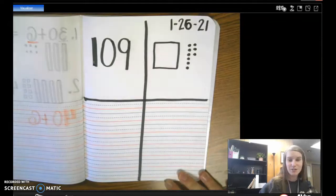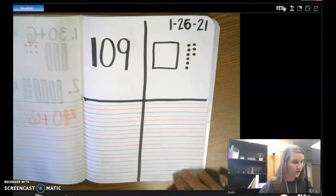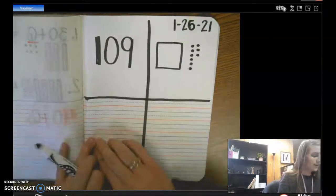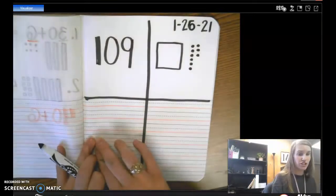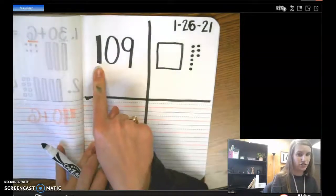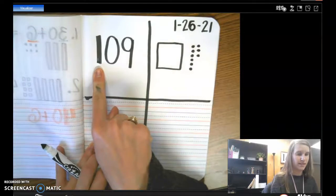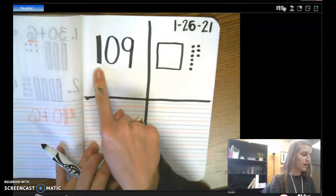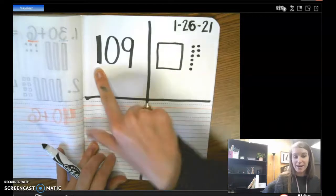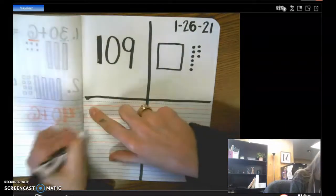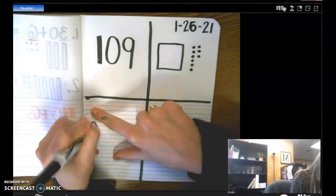All right, now let's work on our expanded form. So let's look at each digit first. Let's look at our 100's first. 1 in our 100's place. What is the value of that 1? 100, great job. So down here, let's write 100.